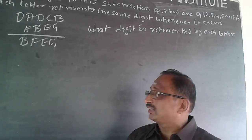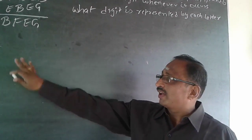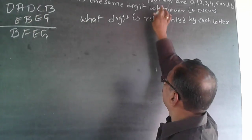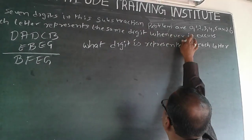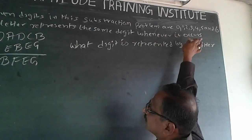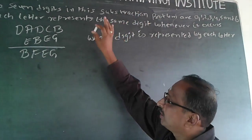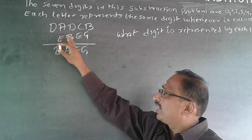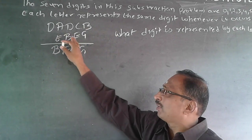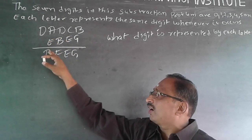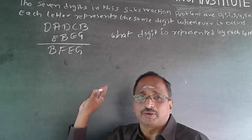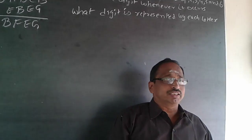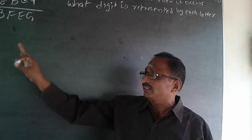What it implies is, wherever you have got D, it will have the same number from any one of these 0 to 6. Similarly, wherever you have E, it will have the same number. D and A will not have the same number, A and D will not have the same number, B and F will not have the same number. So I will have to use all these 7 numbers for substitution.